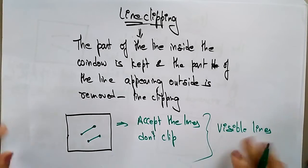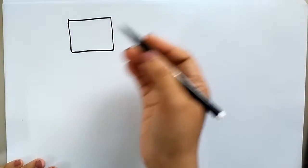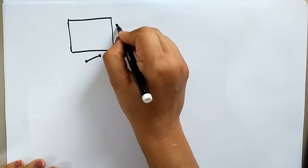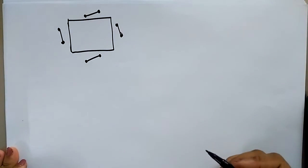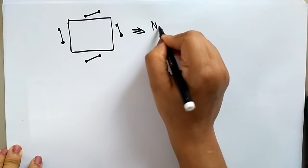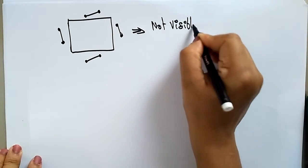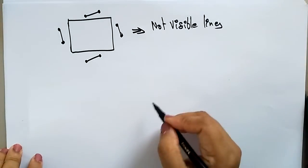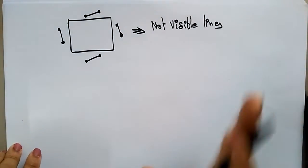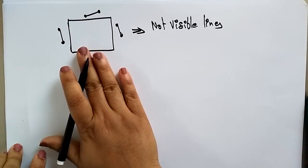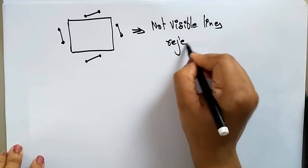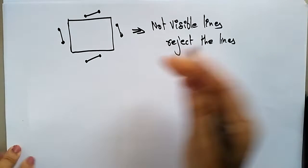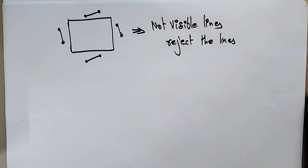Now let's take another example. If both endpoints of a line are present outside the clipping window, then we call it a not-visible line. Here also there is no need for clipping, because you are rejecting the lines — they are completely outside the clipping window, so just reject them.